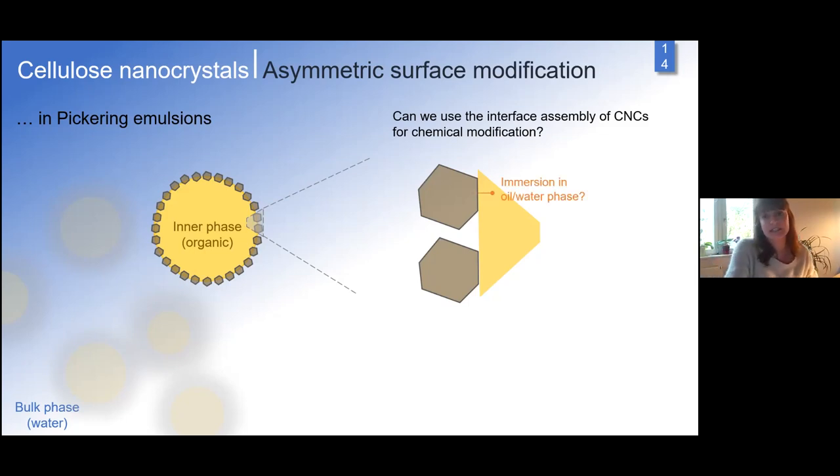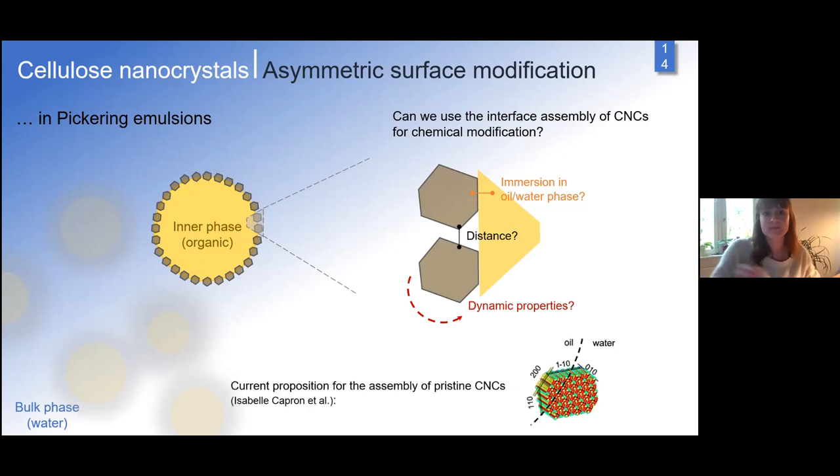We were interested: can we use this assembly of cellulose nanocrystals to the interface for chemical modification, and modify them from both sides, from the water side and the oil side? One important thing is their immersion in both phases. Are they more exposed to water or oil phase? This is determined by their surface chemistry. Can we play with the distance between crystals? Can we shield some parts from modification to have steric hindrance?